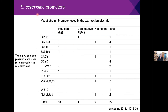For Saccharomyces cerevisiae, there's a wider range of strains but again a limited number of promoters. The inducible system uses the GAL promoter, induced by galactose addition, along with the constitutive PMA1 promoter. The tradition is to use episomal plasmids rather than genomic integration, and a range of different strains are used, typically with the galactose-inducible promoter.